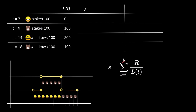Now let's calculate the left part of the equation for each time step. We'll call it `s`, equal to the left part of the equation times r. At t equals 7, `lt` is 0, so `s` is also 0. At t equals 9, we add r over 100 times (9 minus 7) — that's the 100 staked from Alice for 2 seconds. At t equals 14, `lt` would have been 200 for the time between 9 and 14, so we add r over 200 times (14 minus 9).